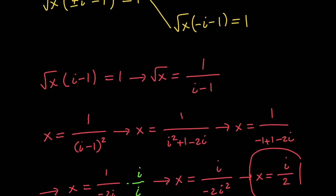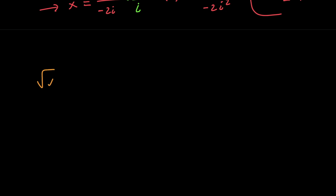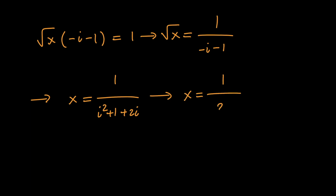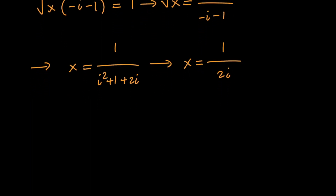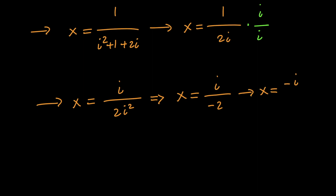In the second case, the square root of x times negative i minus 1 equals 1. That means the square root of x equals 1 over negative i minus 1. Squaring both sides, x equals 1 over i squared plus 1 plus 2i. Since i squared is negative 1, x equals 1 over 2i. Multiplying by i over i to clear the denominator, x equals i over 2i squared, which means x equals i over negative 2, which means x equals negative i divided by 2. So this was the second solution from the second method.